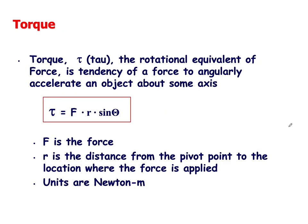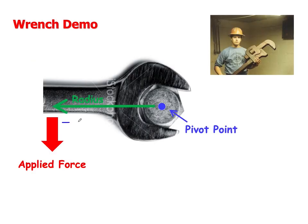Here's the definition of torque. Torque is represented by the Greek letter tau, where F is the force, R is the distance from the pivot point to the location where the force is applied (usually the radius), and the units for torque are Newton-meters — because force is in Newtons, R is in meters, and theta is the angle between these two. In the previous wrench example, that angle is 90 degrees, but it doesn't have to be.